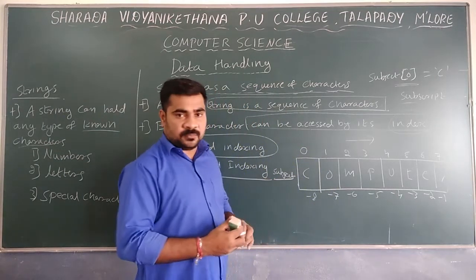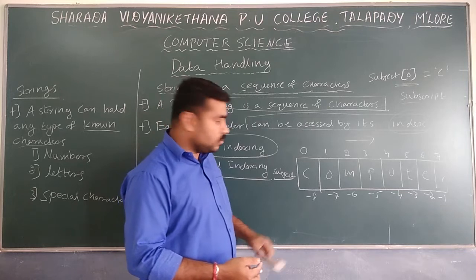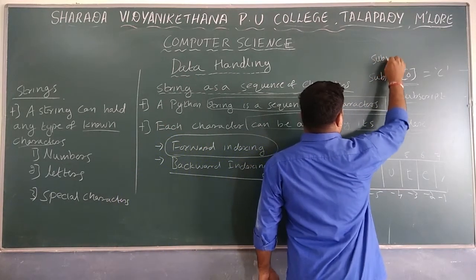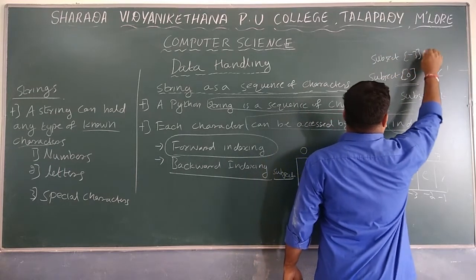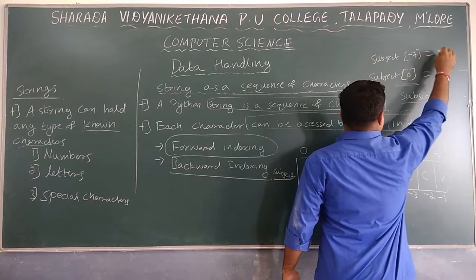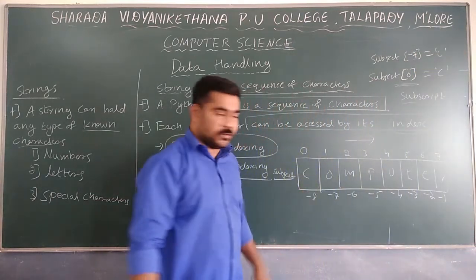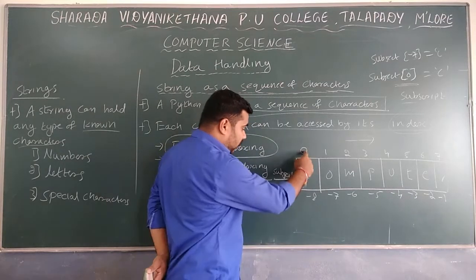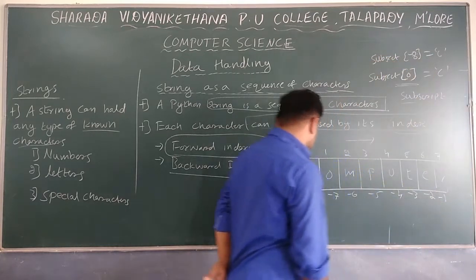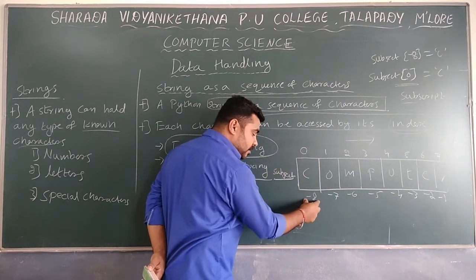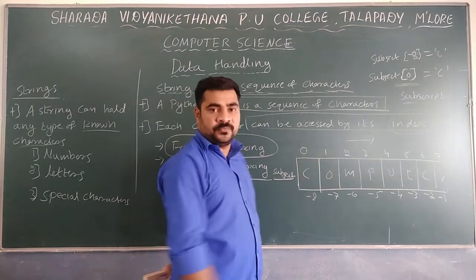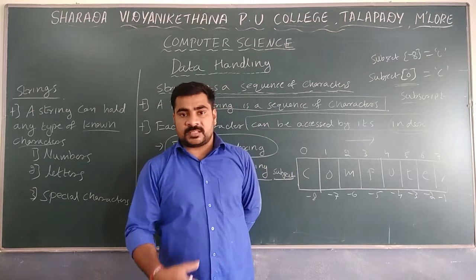So subject[0] is C, and subject[-8] is also C. Subject[1] and subject[-7] are both O. That is how forward indexing and backward indexing correspond: index 0 and index -8 refer to the same first character when the string length is 8.